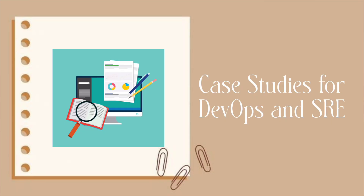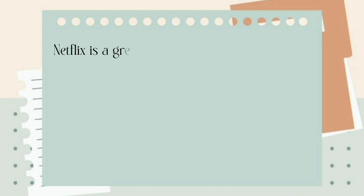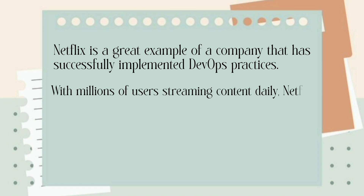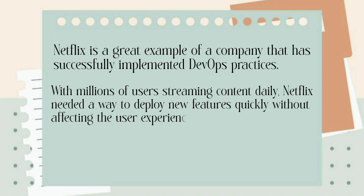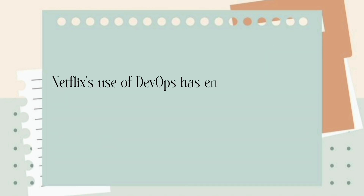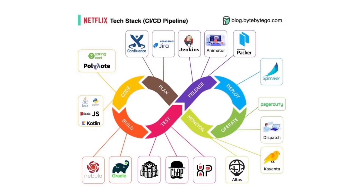To give a better idea of how DevOps and SRE work in the real world, let's look at some case studies. First is Netflix. Netflix is a great example of a company that has successfully implemented DevOps practices. With millions of users streaming content daily, Netflix needed a way to deploy new features quickly without affecting the user experience. By adopting a DevOps approach, Netflix automated its deployment pipeline, allowing for hundreds of deployments per day with minimal downtime. This has enabled them to innovate rapidly, push updates seamlessly and maintain a high level of service availability, staying ahead in the competitive streaming industry.